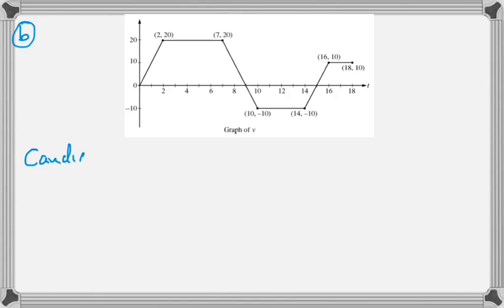Let's move on to the next one. So the next one is about the farthest it ever gets from the building. So the candidates are the end points, so 0 and 18, and the critical points, 9 and 15.